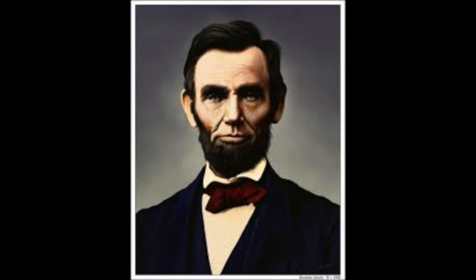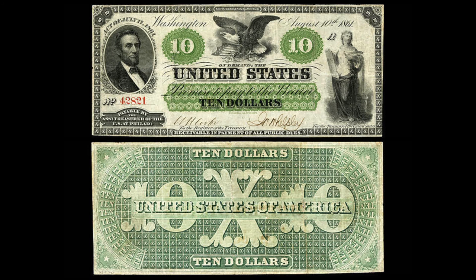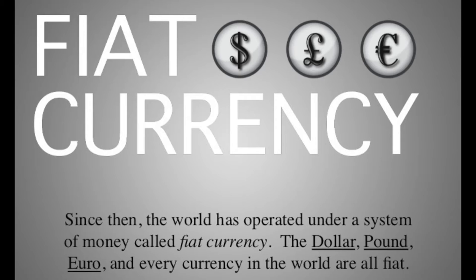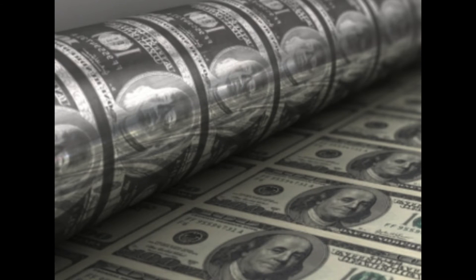Lincoln, still faced with funding the Civil War and not wanting to borrow money, led Congress to pass the first Legal Tender Act in February 1862. This authorized the printing of $150 million in United States notes, also known as greenbacks, printed from 1862 to 1871. But unlike the original greenbacks, these notes were not backed by gold but were fiat currency, meaning they were only backed by a promise. What started as only $150 million of them became almost $500 million worth in circulation.